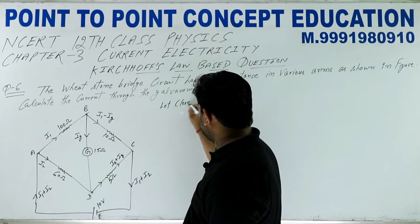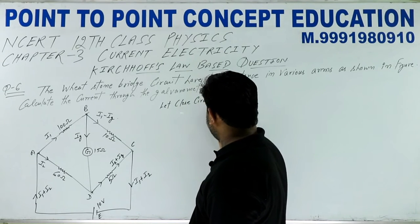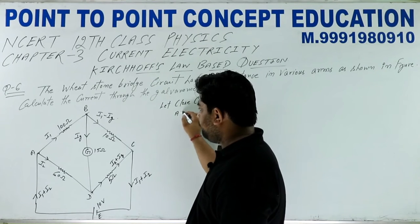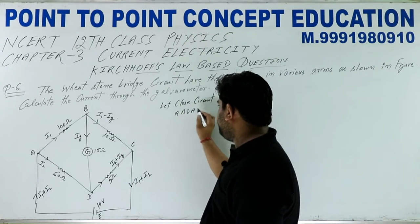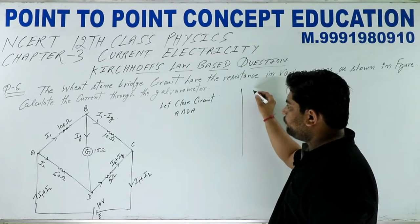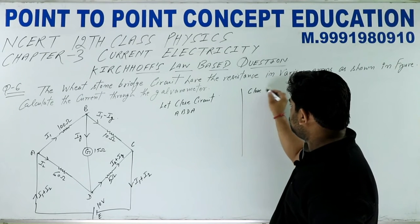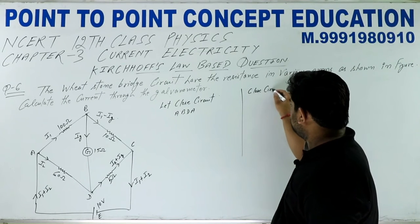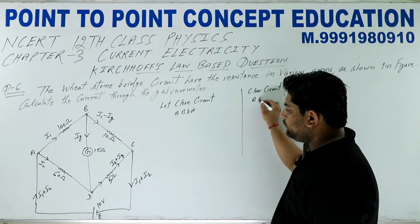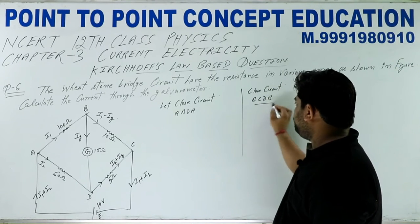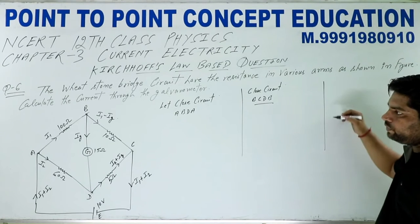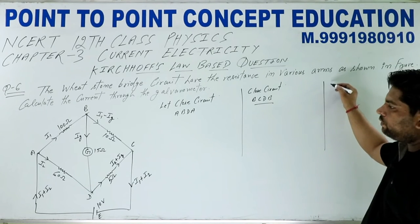पहला close circuit: A, B, D, A। दूसरा close circuit हम ले रहे हैं: B, C, D, B। एक और circuit चाहिए।